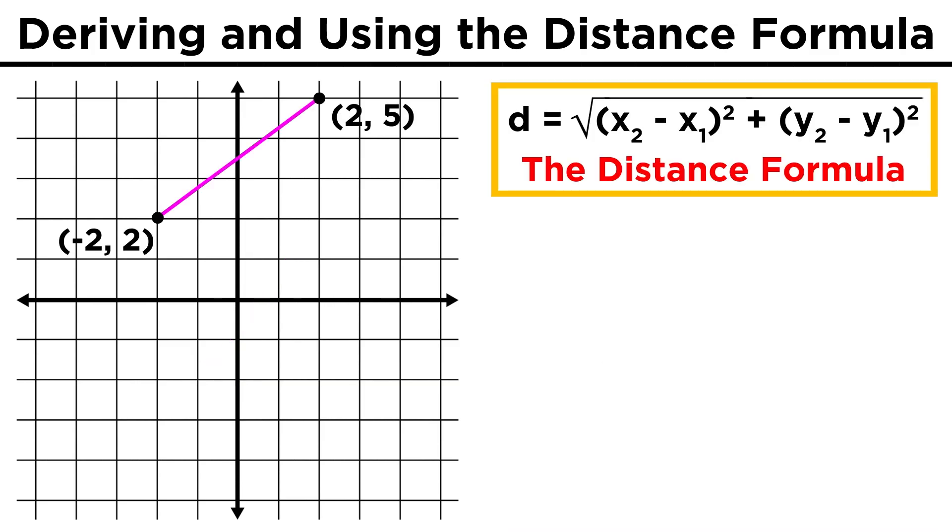Take the points negative two, two, and two, five. What is the distance covered by the line segment that connects these two points? Well let's take our x values and our y values and plug them into the formula.